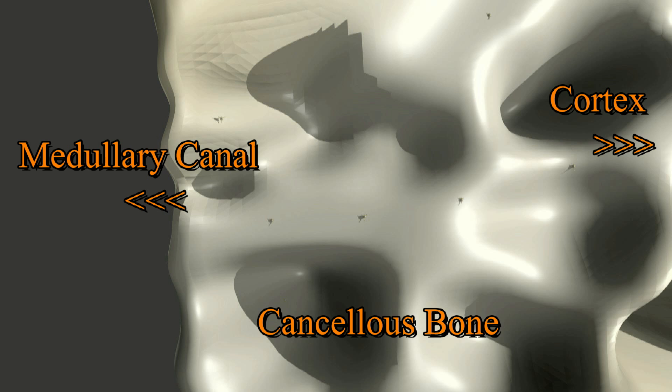Instead of densely packed osteons, we find a porous meshwork of bone known as trabecular or spongy bone. This structure does not provide as much strength and rigidity; it has a higher turnover than cortical bone and is more elastic. The pores provide a place for storage of bone marrow.